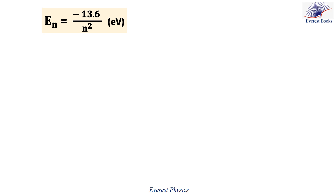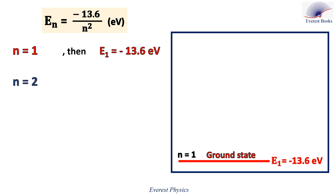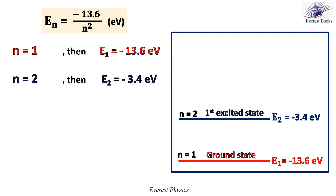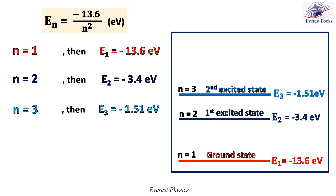Now let's use this expression to calculate some energy levels of the hydrogen atom. For n equals 1, E1 equals minus 13.6 electron volts — this is the ground state. For n equals 2, E2 equals minus 3.4 electron volts — the first excited state. For n equals 3, E3 equals minus 1.51 electron volts — the second excited state. When n approaches infinity, En approaches zero — this is the ionized state.